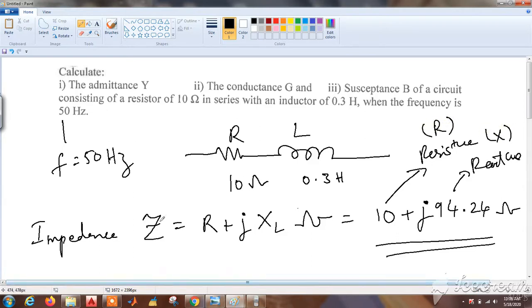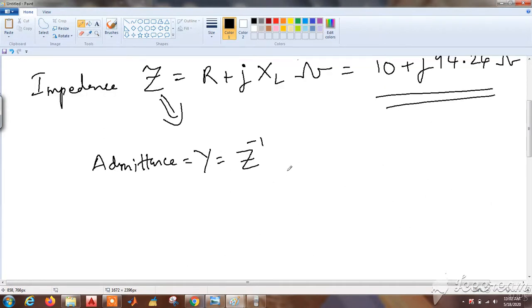Similarly, when we do inverse of impedance, we will get admittance. Just we have to inverse Z, that is inverse means 1 by Z. Therefore Y is equal to 1 over (10 plus j94.24).